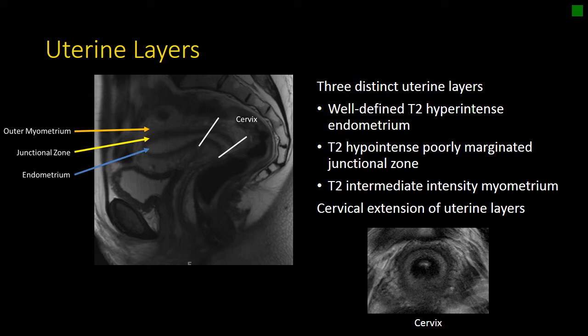When we think about the uterus, you can think about it having three basic layers. The inner endometrium on CT is often low in attenuation and resembles fluid. On MRI, it also resembles fluid and is T2 bright. The junctional zone is the middle layer. On CT, it is often indistinguishable from the myometrium unless there is an enhancement pattern that makes the junctional zone distinguishable from the myometrium, which does occur with relative frequency.